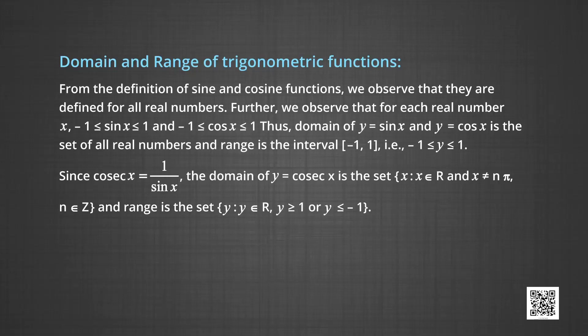Since cosec x is 1 upon sin x, the domain of y = cosec x is the set of x such that x belongs to real numbers and x is not equal to nπ, where n belongs to ℤ. The range is the set of y such that y belongs to ℝ and y ≥ 1 or y ≤ minus 1.